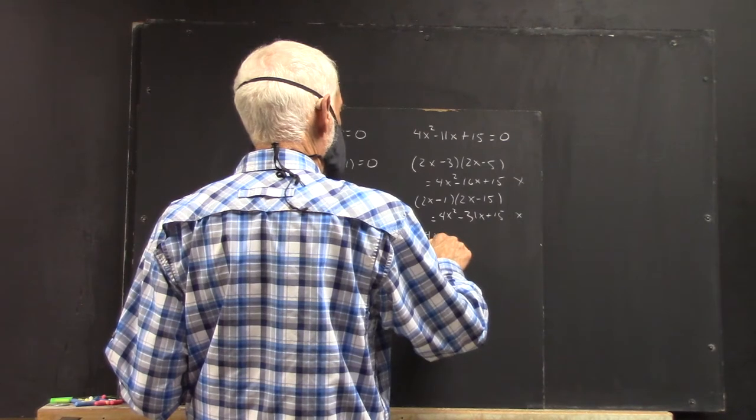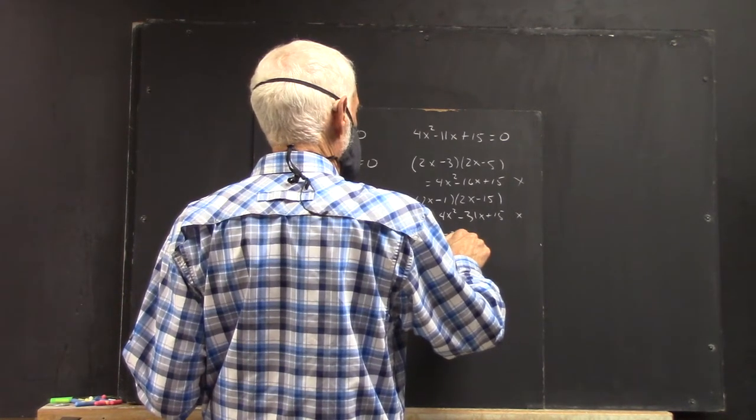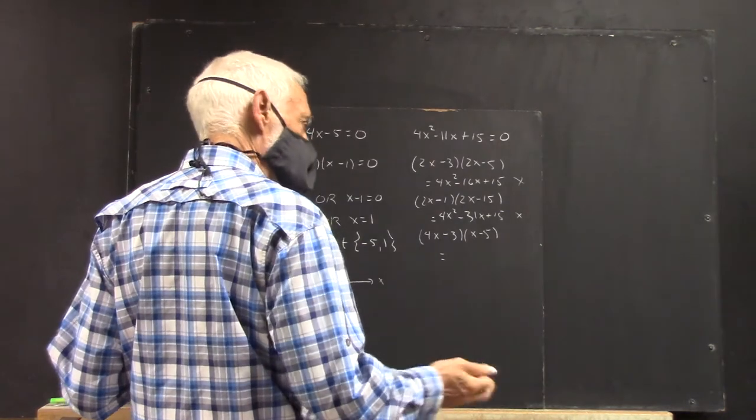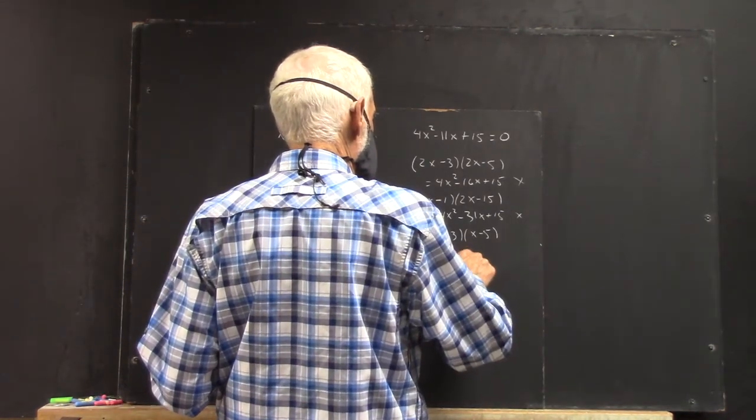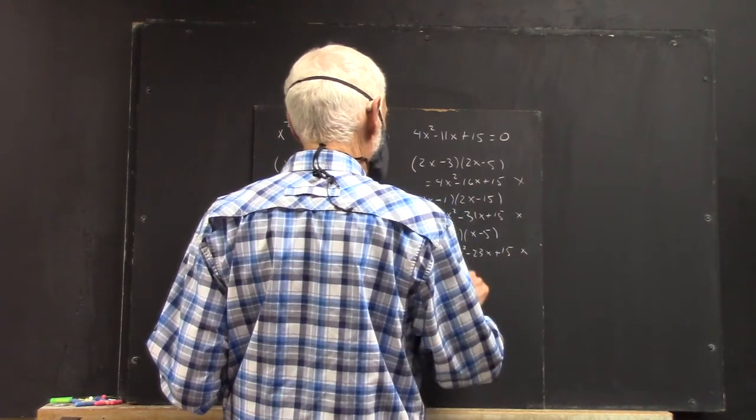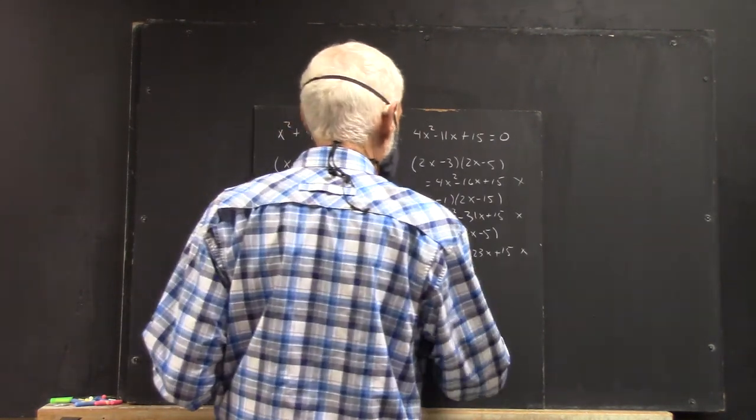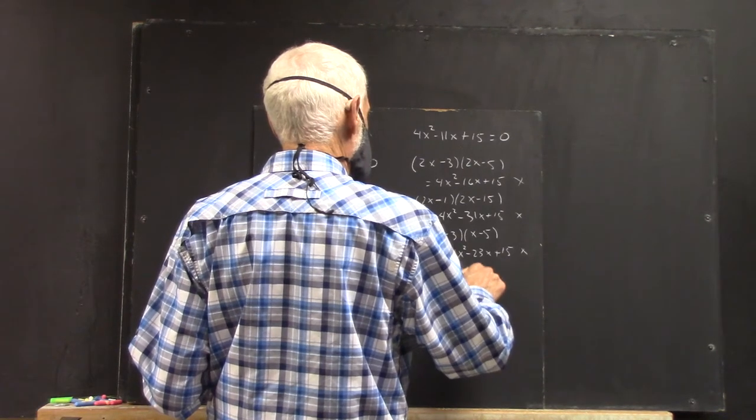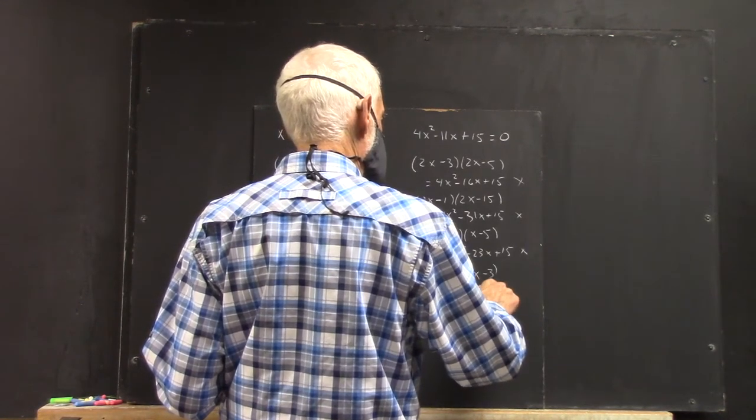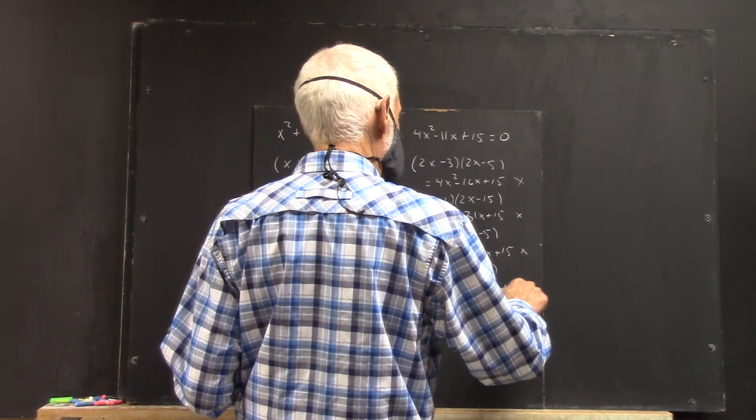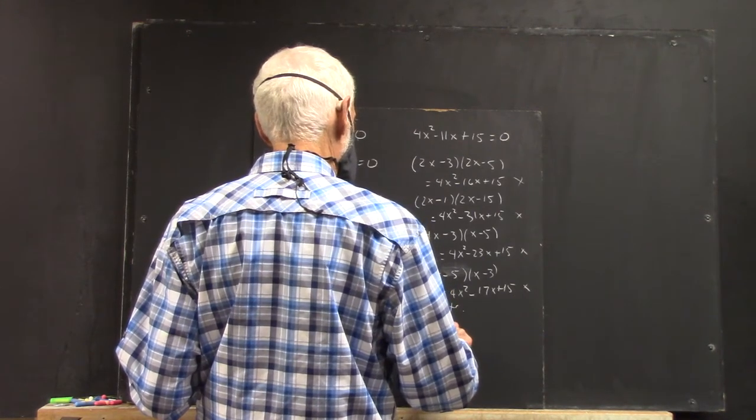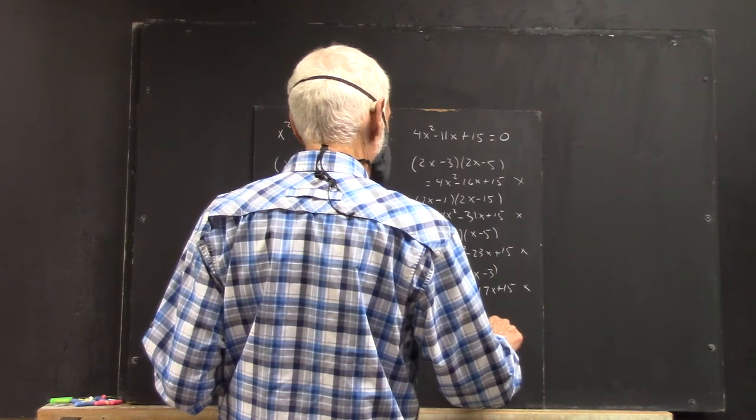Okay. Then you could try 4x minus 3 times x minus 5. But that equals 4x squared minus 17x plus 15. You're going to get 4x squared minus 23x plus 15. No way. And you try other possibilities. Well, you try 4x minus 5 times x minus 3. But that equals 4x squared minus 17x plus 15. Which is not good. Et cetera. Well, nothing works.